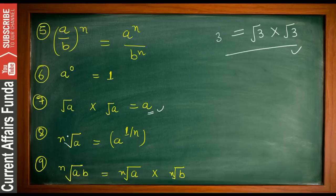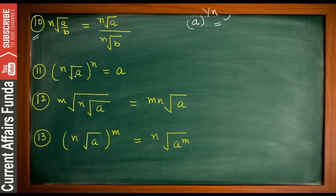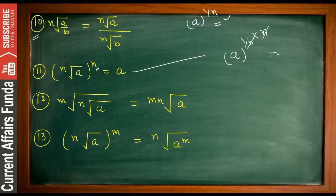Formula eight: the nth root of (a×b) equals √a × √b, with each factor under its own root of degree n. Formula nine: the nth root of (a/b) = (nth root of a) / (nth root of b), which equals a^(1/n) / b^(1/n). Formula ten: the nth root of a^n equals a, because a^(1/n) raised to the power n gives a^1 = a — the n's cancel out.